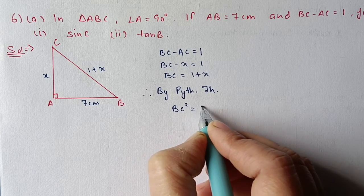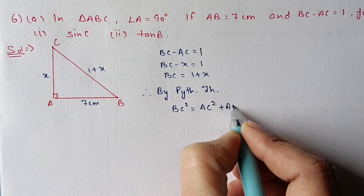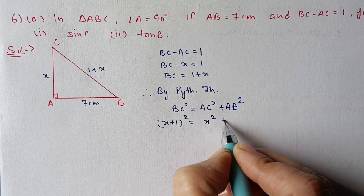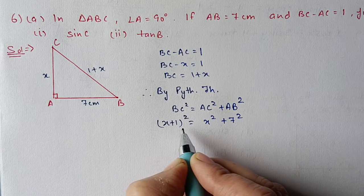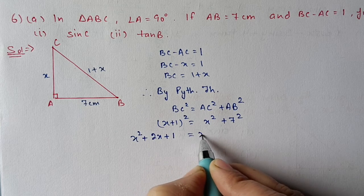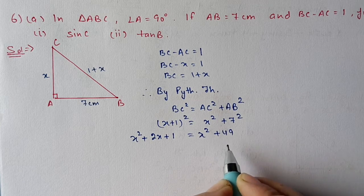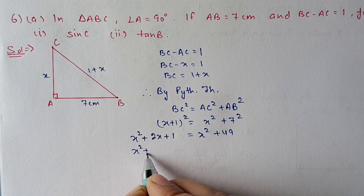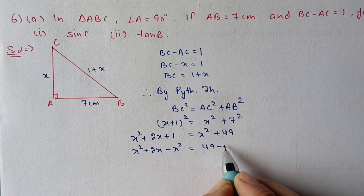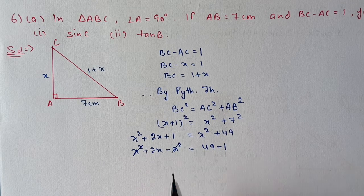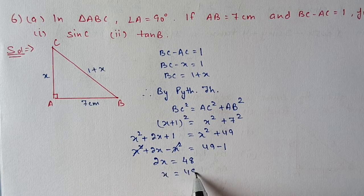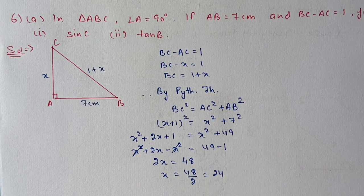Now we use Pythagoras theorem. BC square equals AC square plus AB square. BC is x plus 1, AC is x, AB is 7. Applying the (a + b)² formula: x squared plus 2x plus 1 equals x squared plus 49. Shifting variables to one side, x squared cancels out and we get 2x equals 48, so x equals 24.